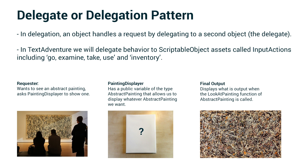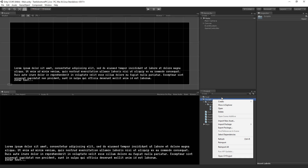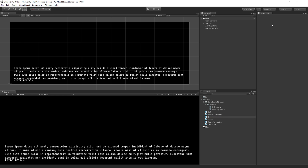This is where a lot of the power in the architecture, and a lot of the flexibility and nice authoring workflow, comes from in this setup. And if you watched the pluggable AI with scriptable objects training, you'll see this exact same pattern being used in a more advanced context. Okay, so let's go now and put this to work. We're going to create a new class in our scripts folder called InputAction and open it up for editing.